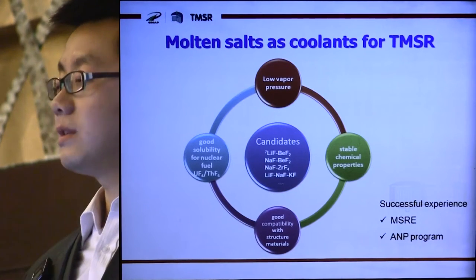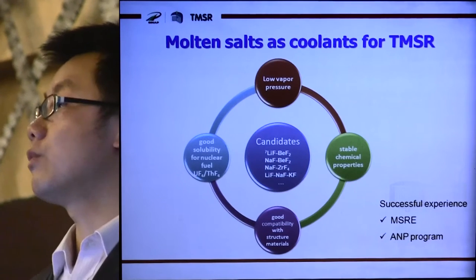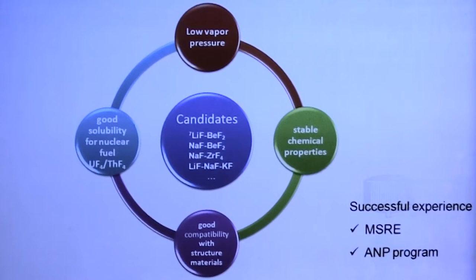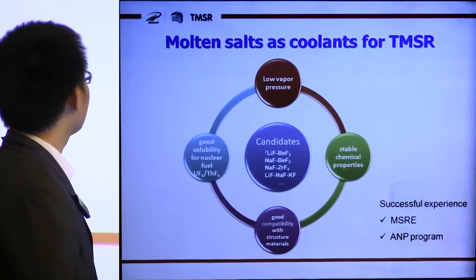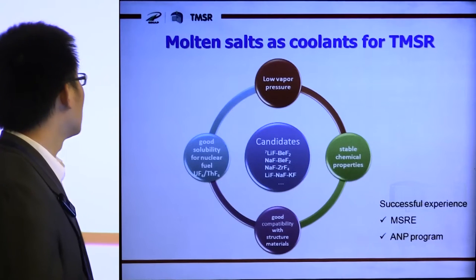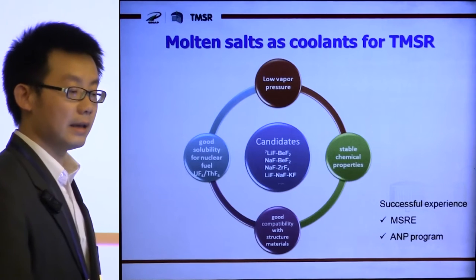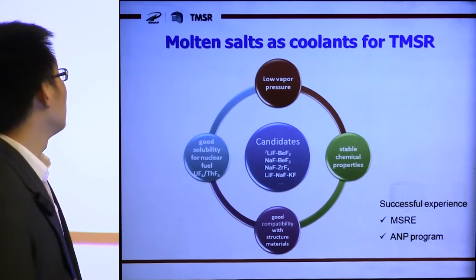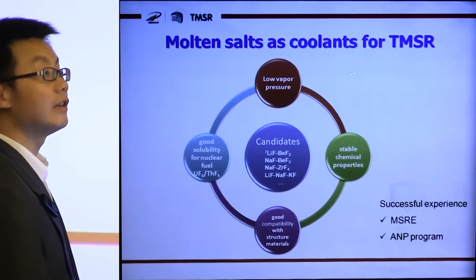It is known that molten salts as coolants for nuclear reactors possess many advantages: low vapor pressure, stable chemical properties, good compatibility with structural materials, and good solubility for nuclear fuel. According to the successful experience of MSRE and ANP programs, these fluoride molten salts are considered as candidate coolants for the TMSR.